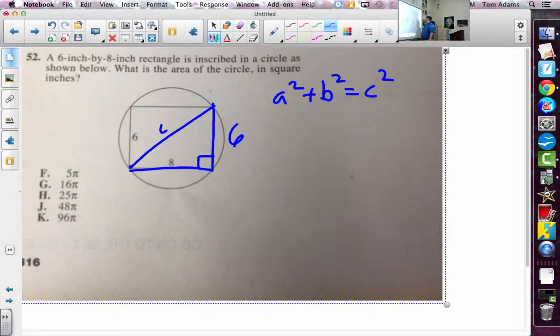And the hypotenuse of a right triangle is always across from the 90 degree angle. We'll let this equal a. We'll let this equal b. And so I say 6 squared plus 8 squared should equal my hypotenuse squared.